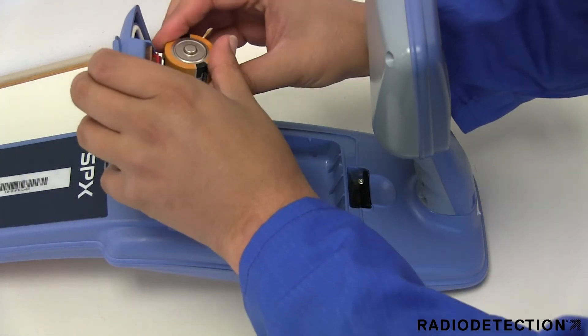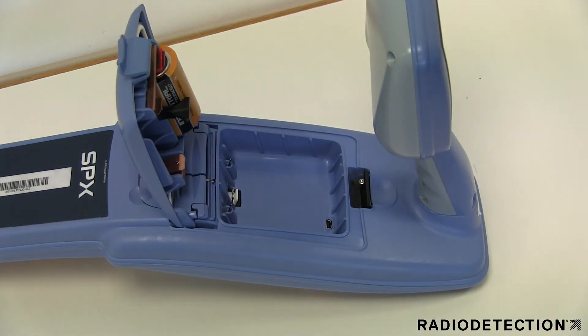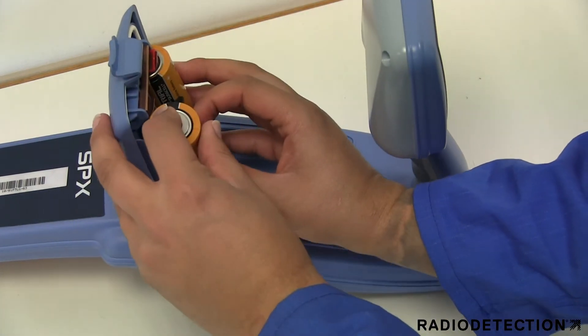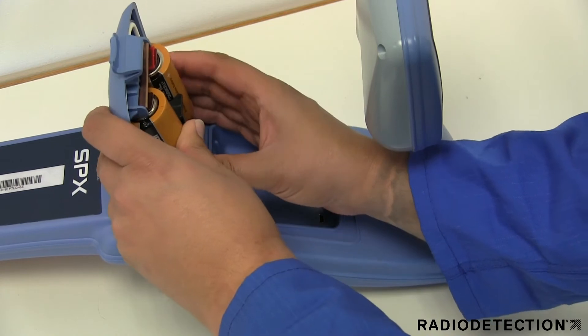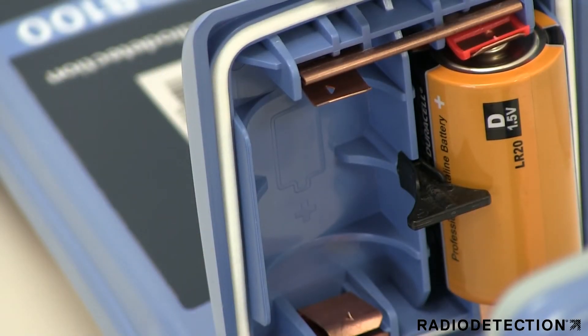To fit the batteries, open the battery compartment and insert two good quality D-cell alkaline or nickel metal hydride batteries. There is a diagram on the battery compartment to guide you on the correct polarity.